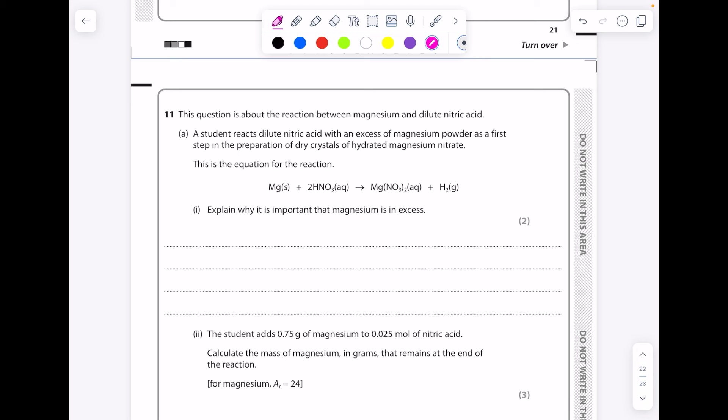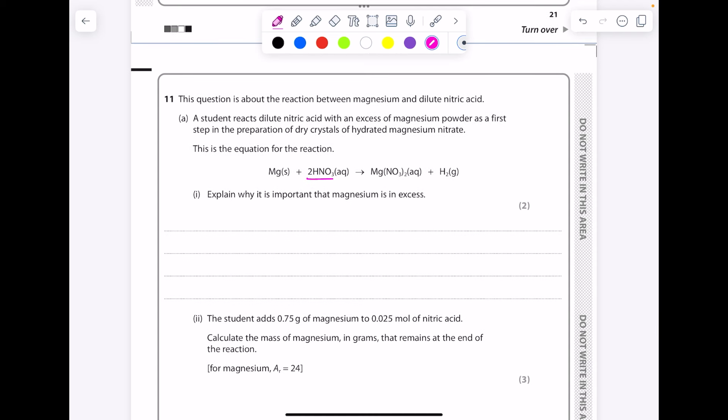This question is about the reaction between magnesium and dilute nitric acid. A student reacts dilute nitric acid with an excess of magnesium powder as a first step in the preparation of dry crystals of hydrated magnesium nitrate. This is the equation. Explain why it's important that the magnesium is in excess. It's to make sure that all that nitric acid reacts and therefore ensuring that the solution only contains magnesium nitrate as opposed to any nitric acid.